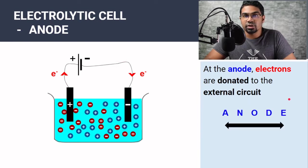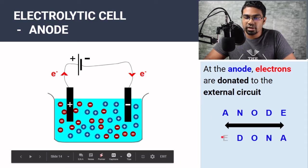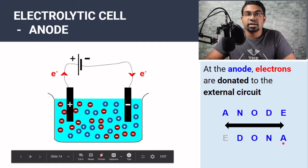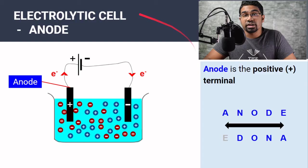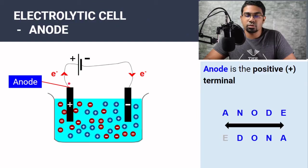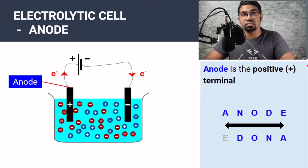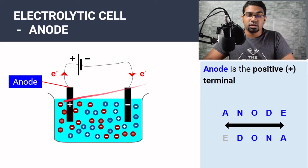That's an easy way to remember this. This is anode — when we flip the word around, we get 'e-donor'. So if we ignore the 'e', we have 'dona' — donate. So anode, donate. In an electrolytic cell, the anode is also the positive electrode. But this is not always the case. For an electrolytic cell, the positive electrode is the anode.